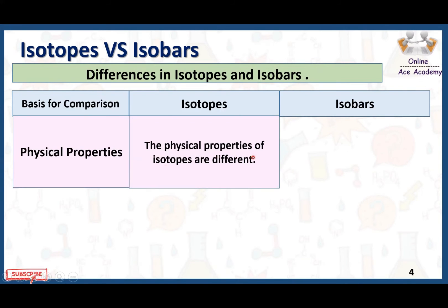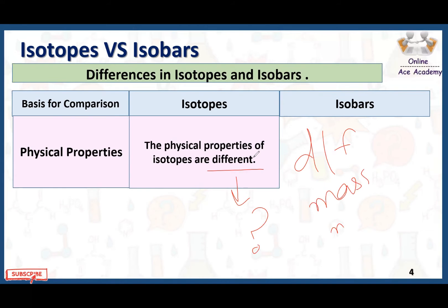Regarding physical properties: the physical properties of isotopes are different. Why? Because isotopes have different mass numbers, and once we have different mass numbers, it means that density, boiling point, melting point, and freezing point are all different from one another.